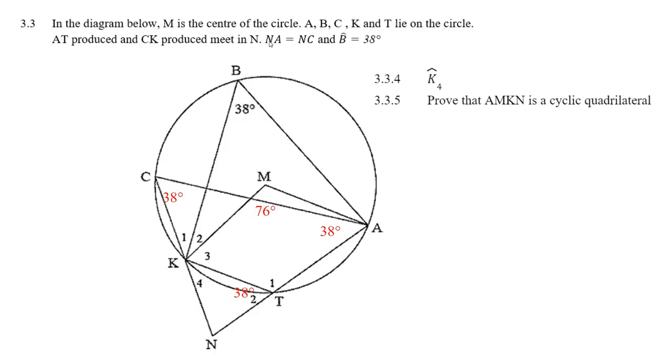Remember when I said it was important to remember that NA equals NC? Well, that means that if that's 38 degrees over there, if CN equals NA, then it's angles opposite equal sides. We've got an angle right there, 38 degrees.